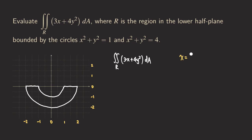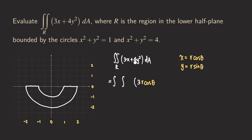Recall that in polar coordinates, x = r cosθ and y = r sinθ. We make those substitutions into the integrand. Leaving the limits blank for now, we write the integrand: 3 times r cosθ, plus 4 times (r sinθ)², and then dA becomes r dr dθ. So the integrand becomes 3r cosθ + 4r² sin²θ, multiplied by r dr dθ.